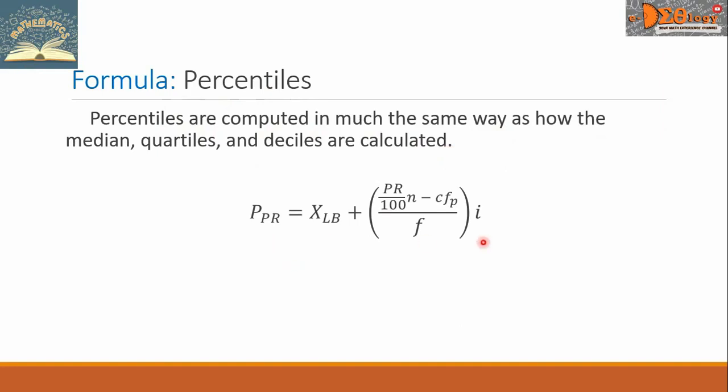This is the formula. P sub PR equals X sub LB plus the ratio PR over 100 multiplied by N minus C F sub P. All over F multiplied by I.